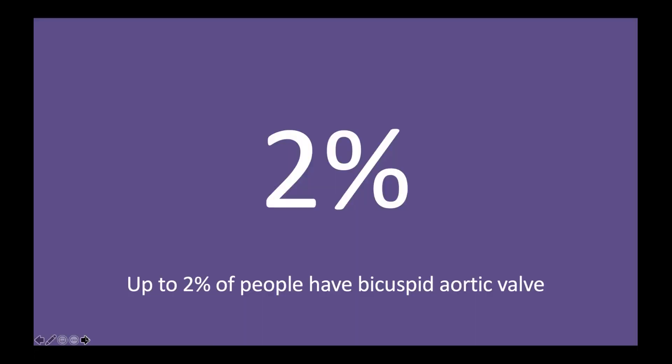Bicuspid valve is reported to be the most common congenital abnormality, occurring in about 2% of the population. As one of my colleagues from Children's Hospital likes to say, if you're in a room with a hundred people, it's likely that at least two of them have a bicuspid valve. It is a very common condition, more common in men than in women — about one and a half times more common in men.